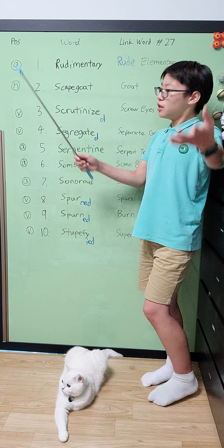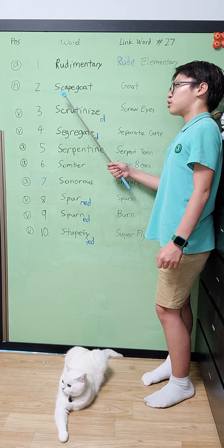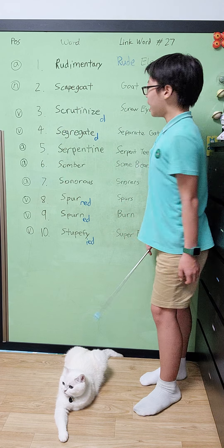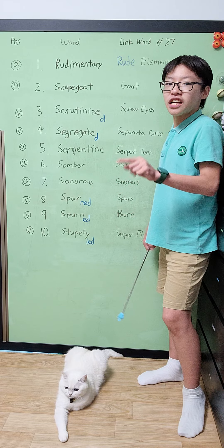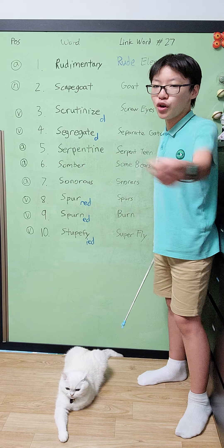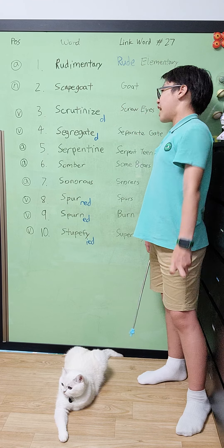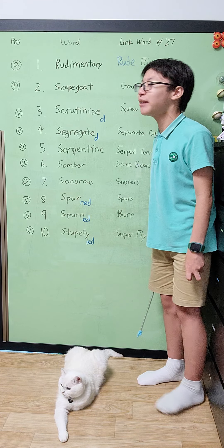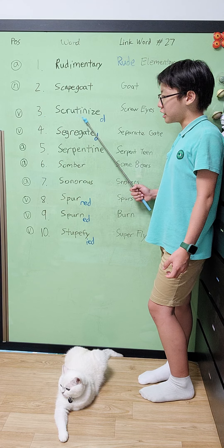Number 2, you have scapegoat, which is a noun that basically means someone that takes the blame for something they didn't do. You remember scapegoat with goat. 'Hey people of the jury, does this goat look like a scapegoat to you guys?' 'Well yes, because it's a goat.' 'That is not a good reason, madam.'